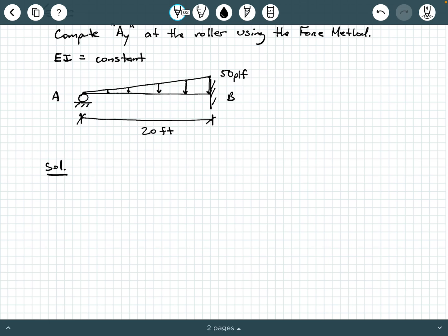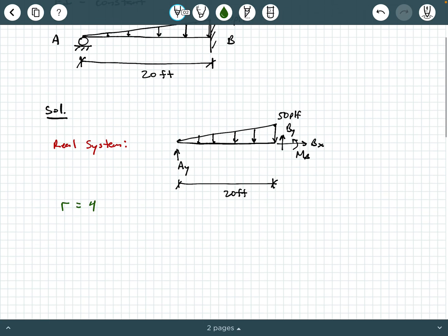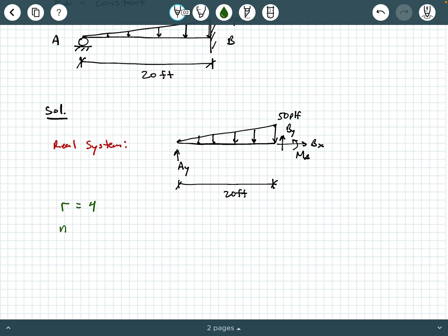So the way we do that is we can draw the real system, which is exactly what we're given, but I'm going to draw it in free body diagram form, and that's going to show us an AY at the roller. And at the fixed connection, we're going to have a BY, a BX, and an M sub B. And then across the span, we have this linearly varying load applied to it. So this is our real system, and we see that we have four external support reactions. So we're going to say R equals 4, and we have one member, which is just the member AB, so N equals 1.